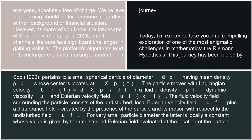The fluid velocity field surrounding the particle consists of the undisturbed local Eulerian velocity field u_f plus a disturbance field created by the presence of the particle and its motion with respect to the undisturbed field u_f. For very small particle diameter, the latter is locally a constant whose value is given by the undisturbed Eulerian field evaluated at the location of the particle center.